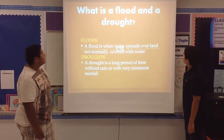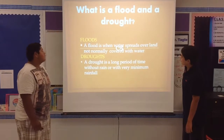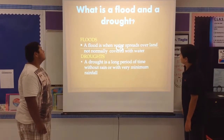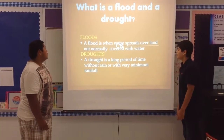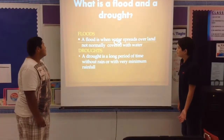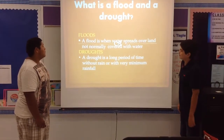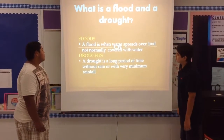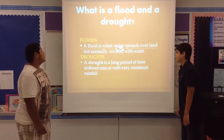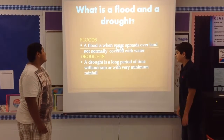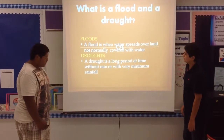What is a flood and a drought? A flood is when water spreads over an area not normally covered with water. A drought is an extended period without rain or with very minimal rainfall.